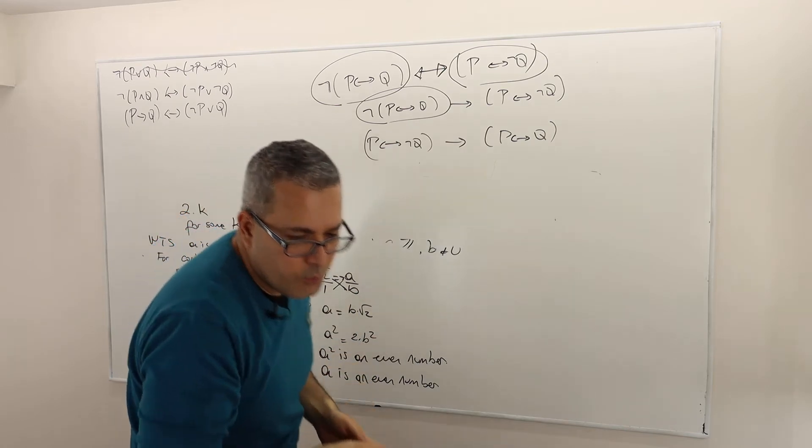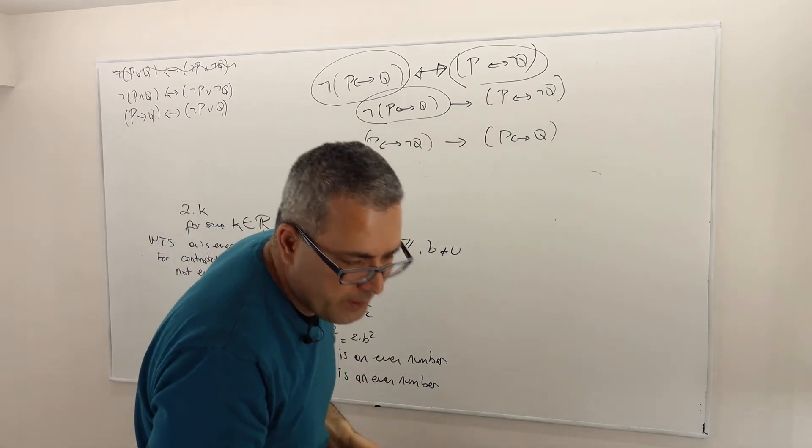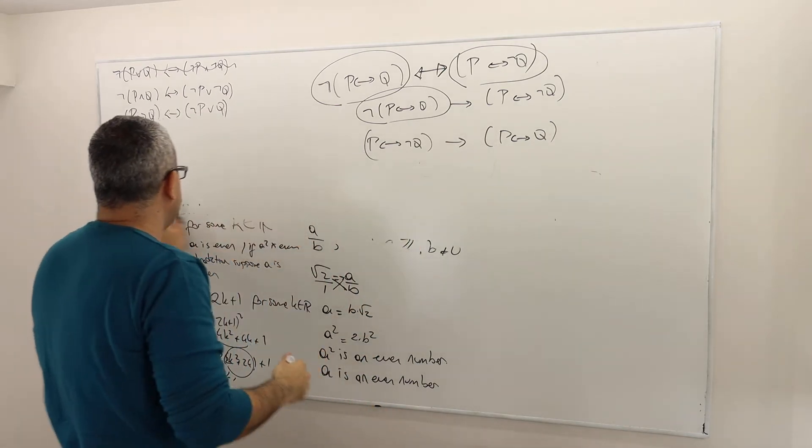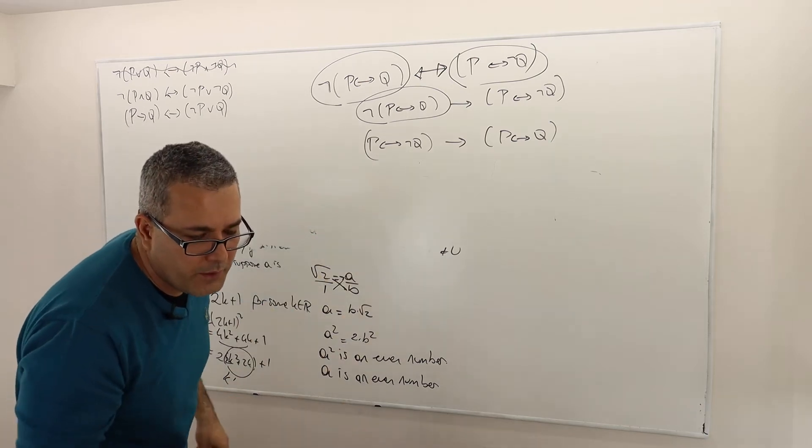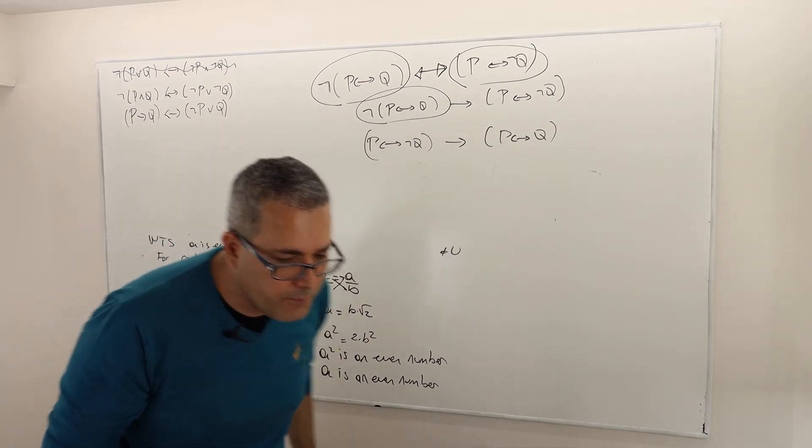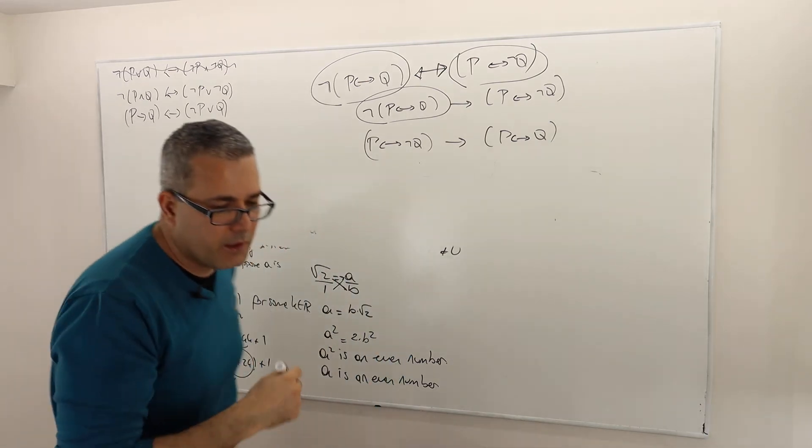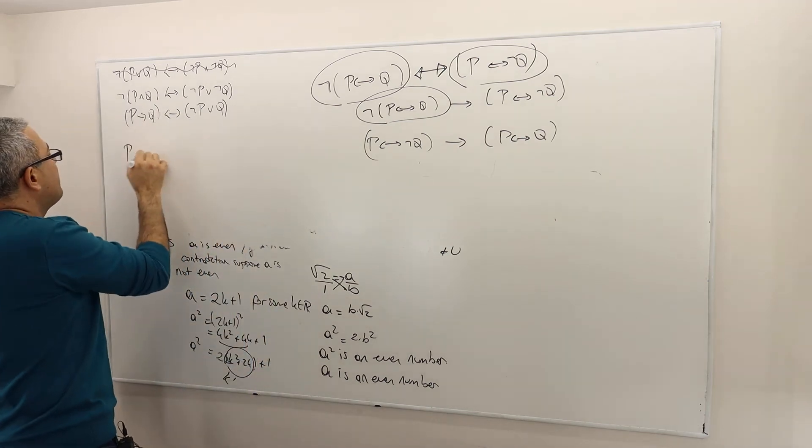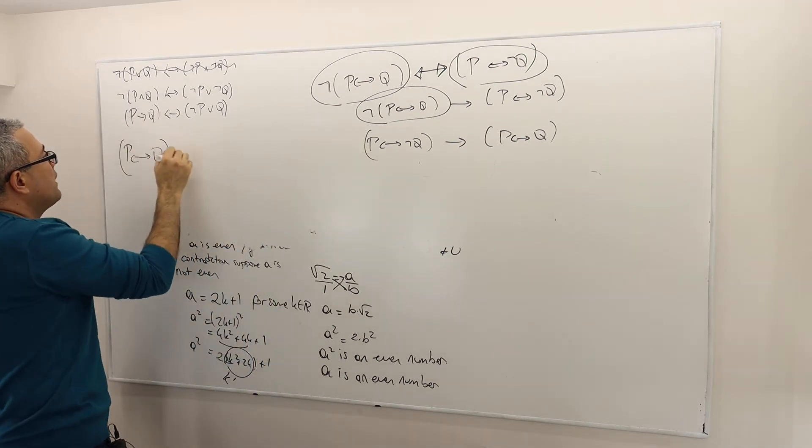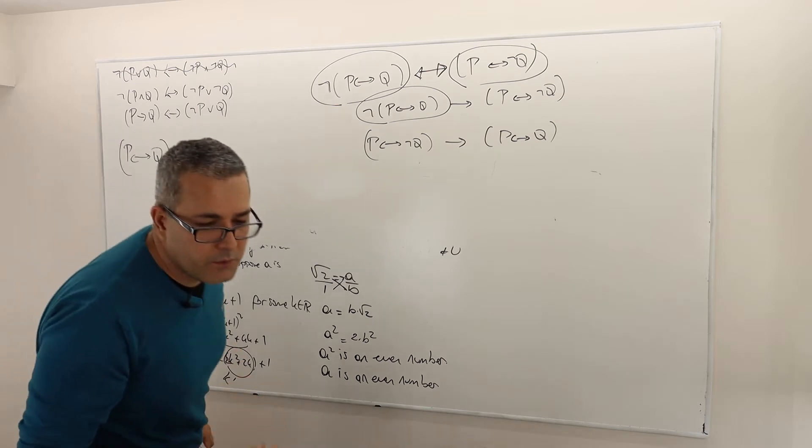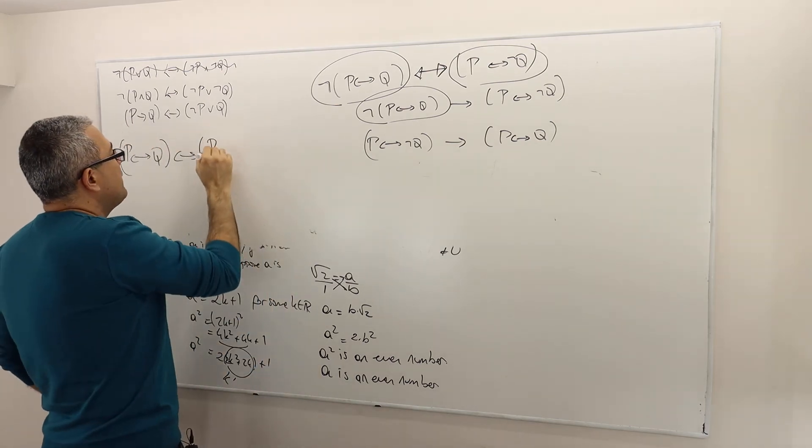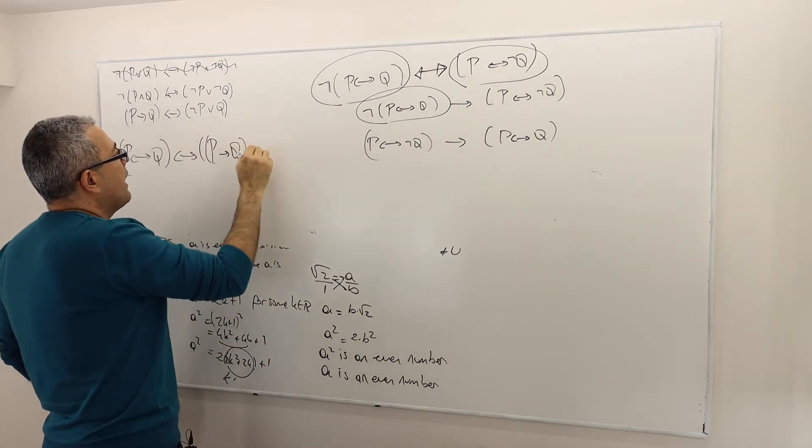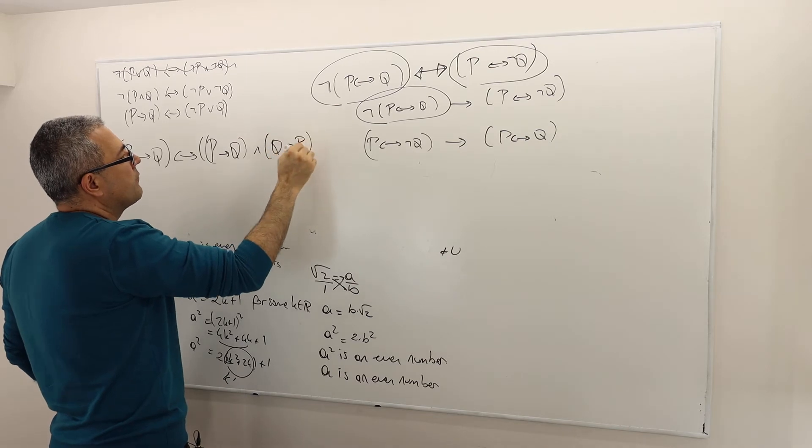another argument which I did not prove because it's not an if and only, well, it is an if and only if argument. But one direction is obvious. It's by conditional inference rule. So I said P if and only if Q is if and only if equivalent to saying P implies Q and Q implies P, right?